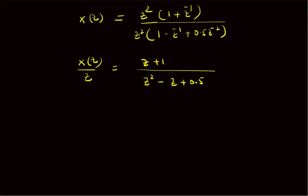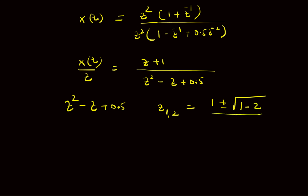Now let us look at the poles of this Z-transform — that is, we have to find the roots of Z-squared minus Z plus 0.5. We can see that the poles are complex and they can be determined as follows: minus B, that is 1, plus or minus square root of B-squared — again 1 — minus 4AC, that is 2, and then divided by 2. Therefore, pole 1 is 1 plus root of minus 1, that is J, divided by 2; and pole 2 will be 1 minus J divided by 2. So these are conjugates of each other.